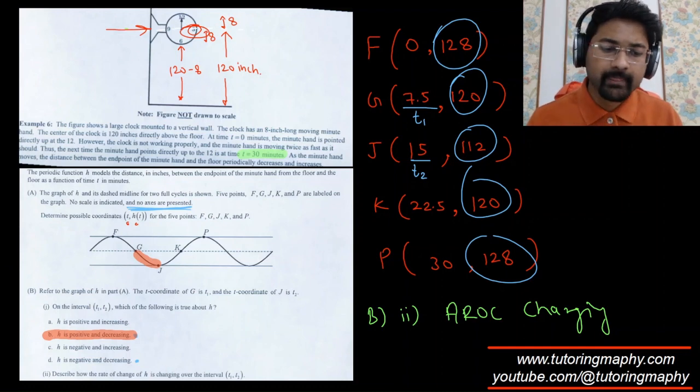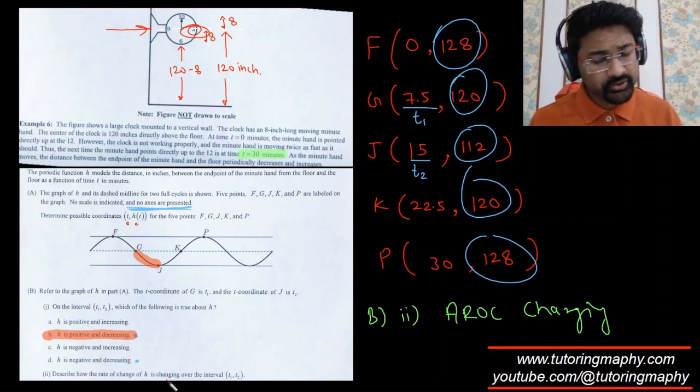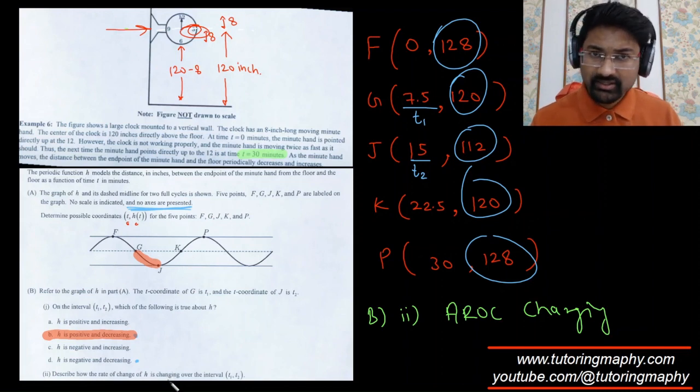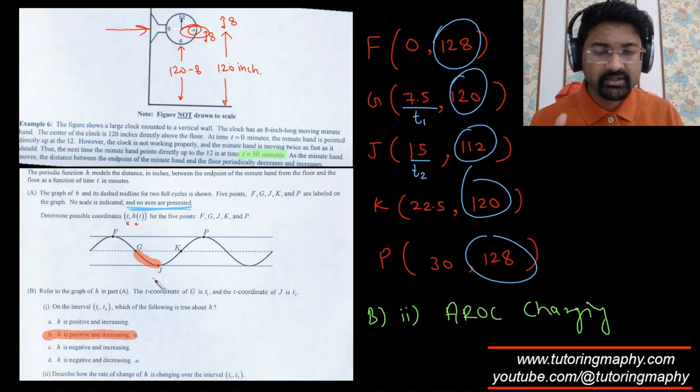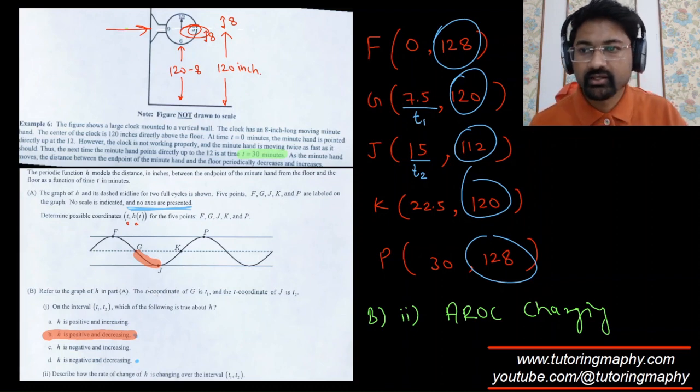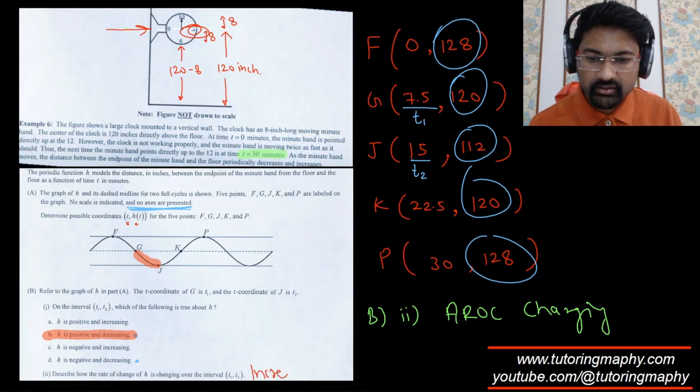They are asking how the average rate of change is changing from T1 to T2. You can clearly see that from G to J, it's a smiling face, and a smiling face is concave up. In concave up, the average rate of change is increasing. So the answer to this part would be it is increasing in nature. Hope that makes sense.